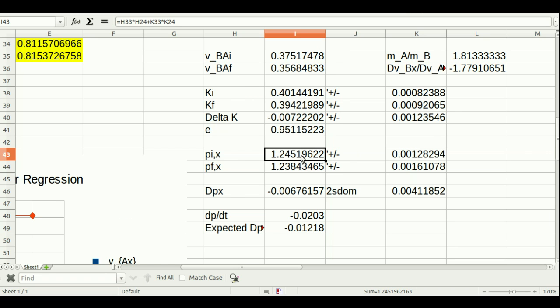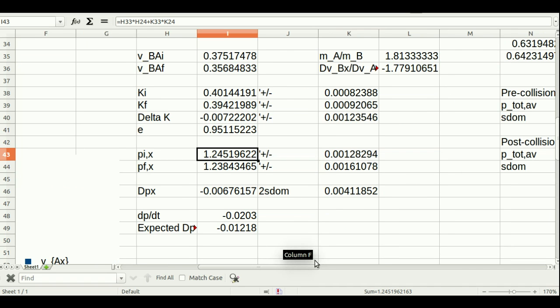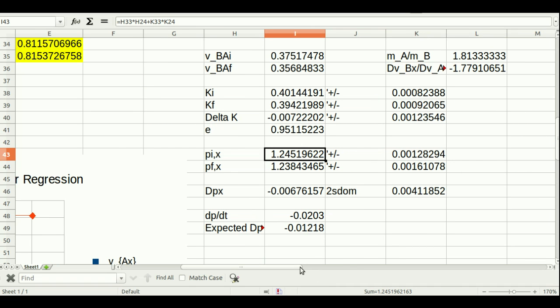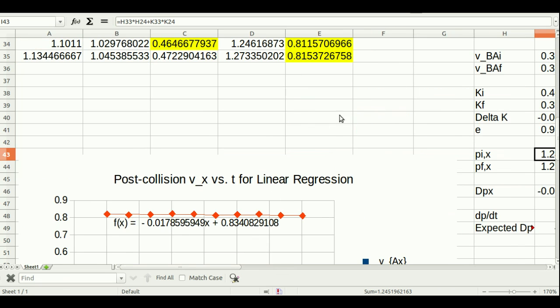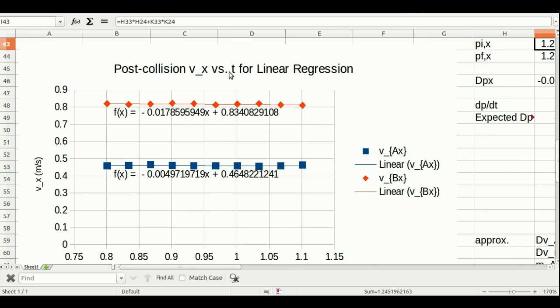So does this mean momentum wasn't conserved in the collision? Well not so fast, there was friction right? This is carts so the friction is small, it's an approximately isolated system but it's not quite isolated and so we should try and account for that. I've taken some of the vx versus t data, the post collision data, because I want a nice flat bit not during the collision where the cart should be experiencing is friction.